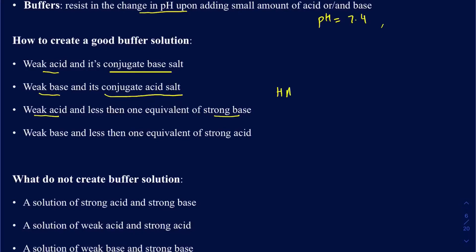Suppose I just have this weak acid HA and I'm adding NaOH to it. At the end of the day, it's going to make water and it's going to make NaA. So HA is your acid and NaA is going to be your conjugate base salt. If I'm losing some of the HA by adding NaOH, what I'm really making is the conjugate base — and that was a requirement to create the buffer solution.